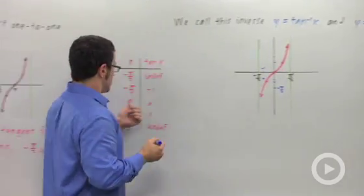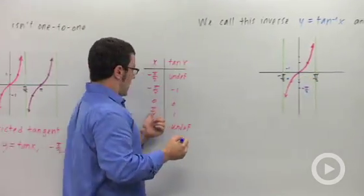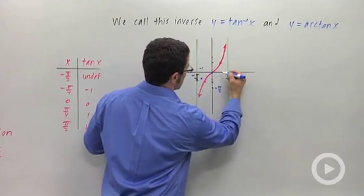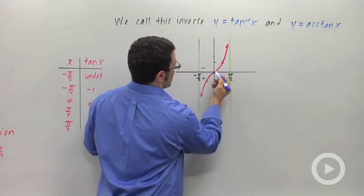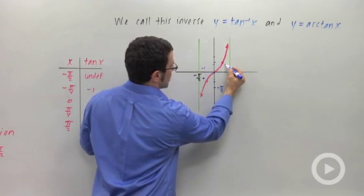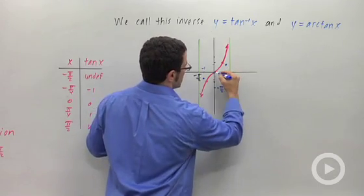And then zero zero is a point. And pi over 4, 1 becomes 1, pi over 4. So 1 is about here. Pi over 4 is halfway between 0 and pi over 2. So there's my 1, pi over 4, and we draw a smooth curve.